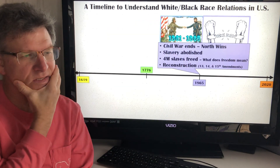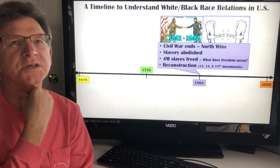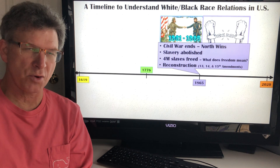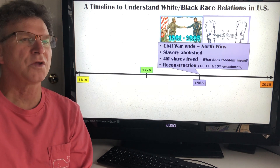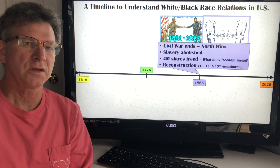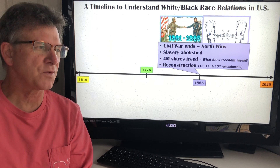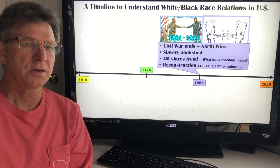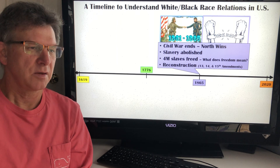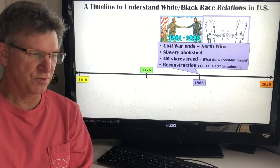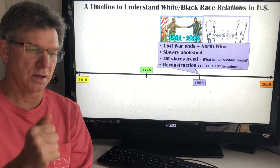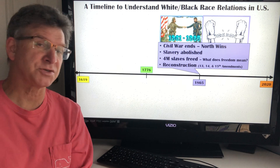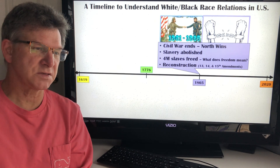As of 1800, slavery took off like a firestorm. Over the course of the next 60 years, slavery increased dramatically until 1860 and the beginning of the Civil War, when you had about 4 million slaves in the United States — roughly 15 to 18 percent of the total population. The Civil War proved to be the decisive moment when the North defeated the South and forever abolished slavery.